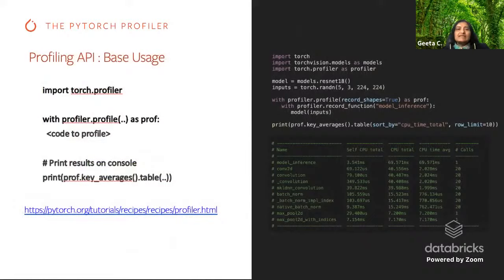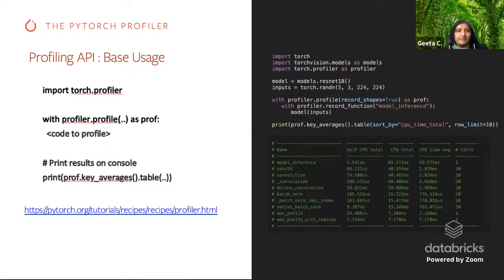At a basic level, if you look at the PyTorch profiling API, you start off by importing the torch profiler, then set up the profiling context and run your code. Finally, you can print the results — what you see on the right-hand side is an example of what that print output looks like. We have many good recipes and examples on the PyTorch.org site that you can look at for reference.